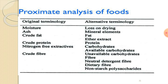The proximate analysis of food includes original terminology and alternative terminology. Original terminology includes moisture, ash, crude fats, crude protein, nitrogen-free extractives, and crude fibers. Alternative terminology includes loss on drying, mineral elements, fats, ether extracts, proteins, carbohydrates, available carbohydrates, unavailable carbohydrates, fibers, dietary fibers, non-starch polysaccharides.